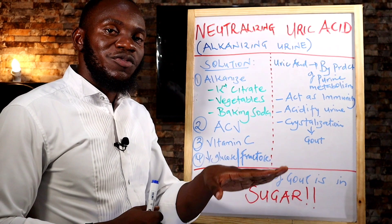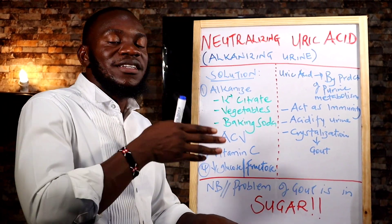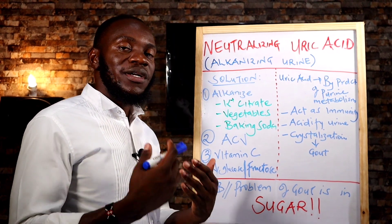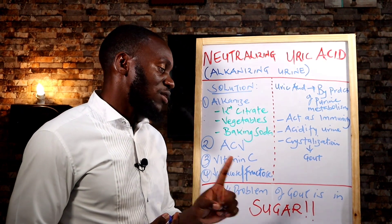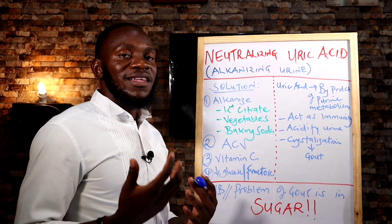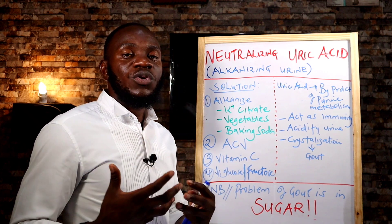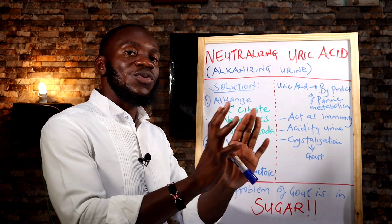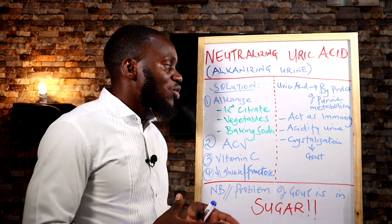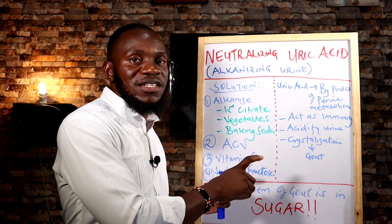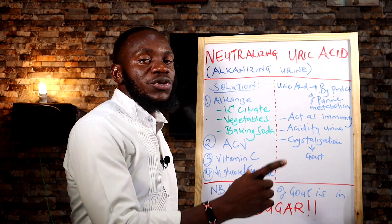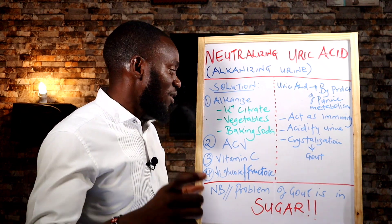Fructose causes fatty liver and alters the metabolism needed to eliminate uric acid. It also activates enzymes that convert purines into uric acid, making it a bigger problem than most people realize. Just as we incorrectly blame salt for problems caused by sugar, we're incorrectly blaming red meat for problems caused by sugar. Vegans who consume a lot of sugar may suffer these conditions more than people who eat red meat. Protect your kidneys and liver by all means.